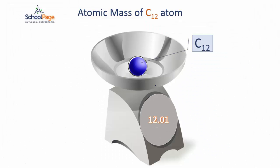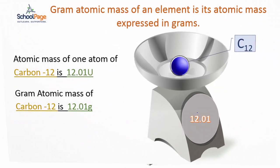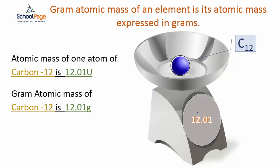Atomic mass of carbon 12 is 12.01 atomic mass units. So gram atomic mass of carbon 12 is 12.01 grams.